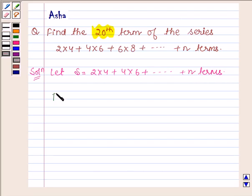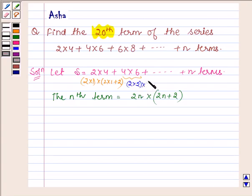Now the nth term of this series will be 2n into 2n plus 2. So first let us replace n by 1, so it can be written as 2 into 1 into 2 into 1 plus 2. The second term can be written as 2 into 2 into 2 into 2 plus 2.